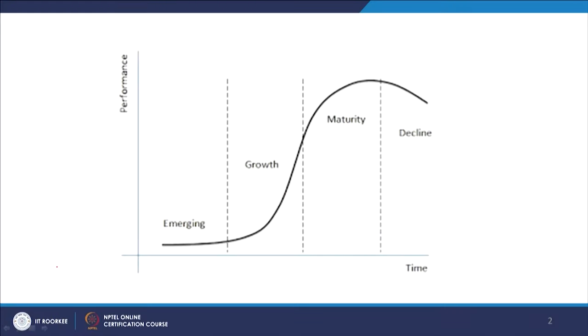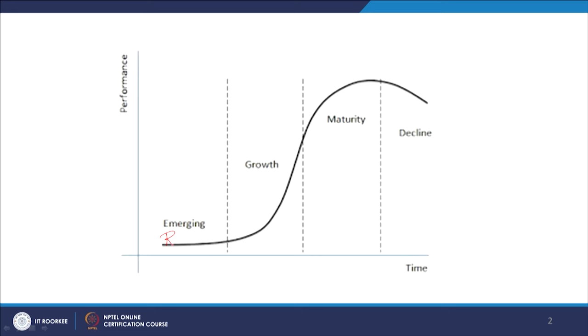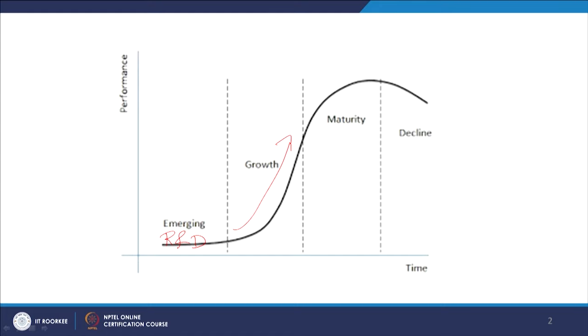As the diagram shows, the first phase is emerging technology, where the performance index — the capability of the technology — is very low. The technology is in a very initial stage, where a lot of R&D and iteration is going on. When R&D is successful, we develop good capabilities and get higher performance. Then the technology goes into the growth stage, where with less effort, less time, and less investment, you get rapid adoption. The performance index also increases and people start adopting the technology.